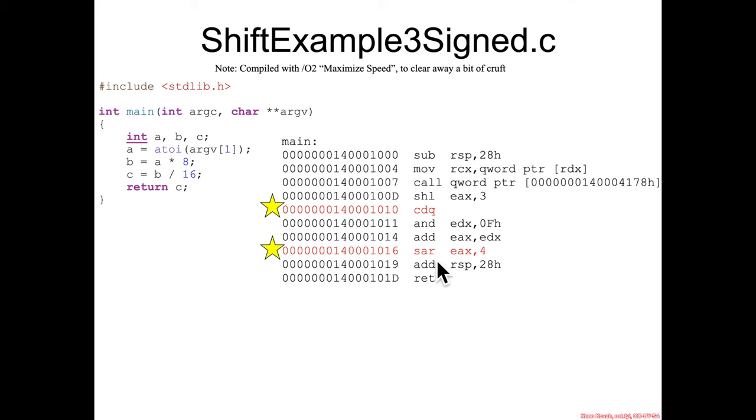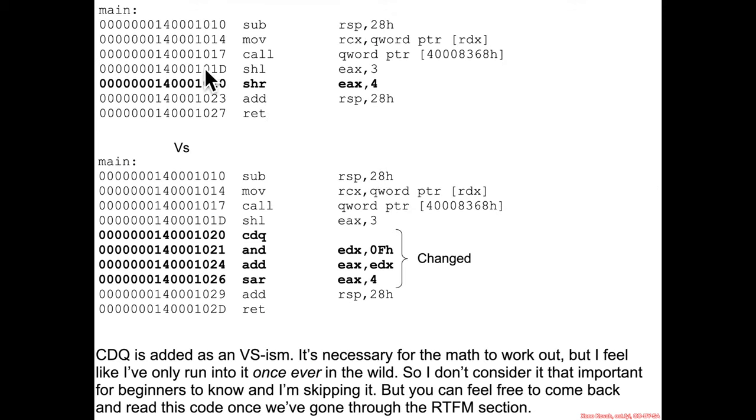CDQ and SAR. Now practically speaking, here's the assembly before, here's the assembly after. We actually see the exact same shift left here, so we'll talk about that in a second. But there's this other bit where the shift right turns into a CDQ and an AND and an ADD and a shift arithmetic right instead of a shift logical right.